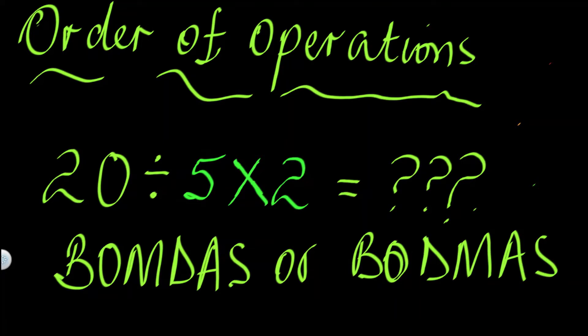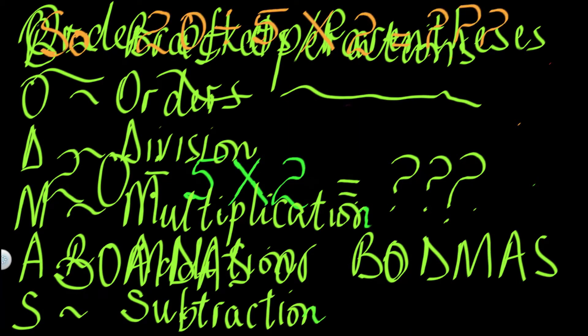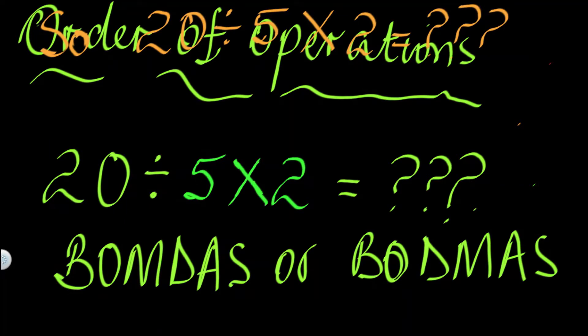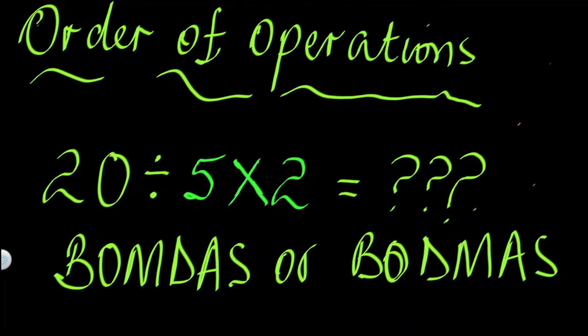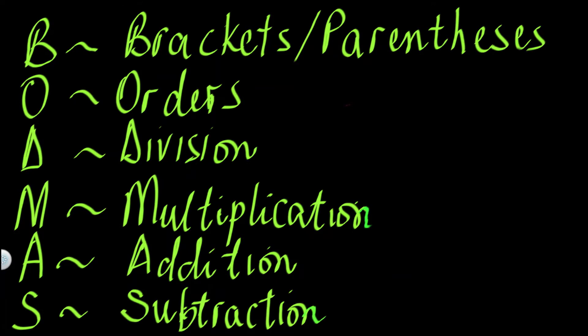I will start with what the acronym stands for. Looking at BODMAS: B is for brackets, O is for orders, D is for division, M is for multiplication, A is for addition, and S is for subtraction.